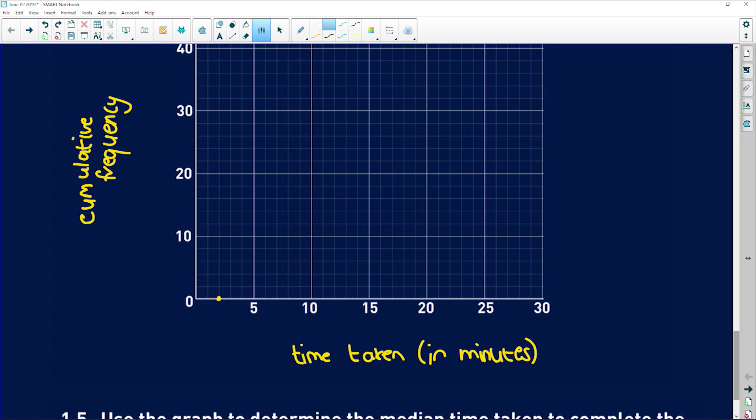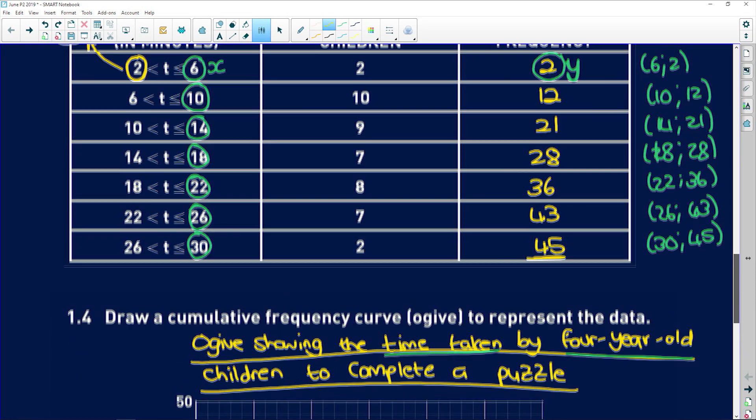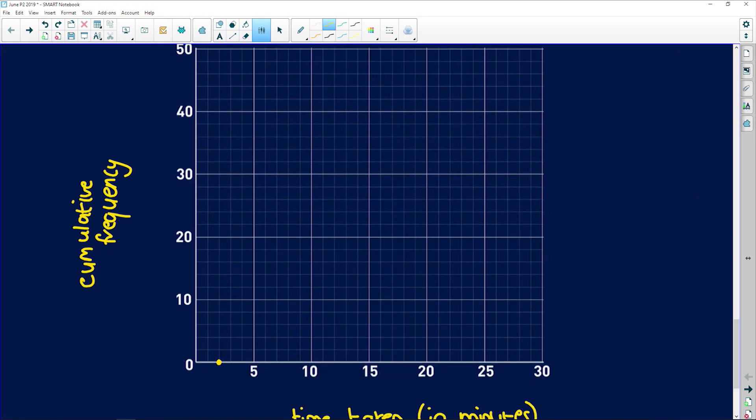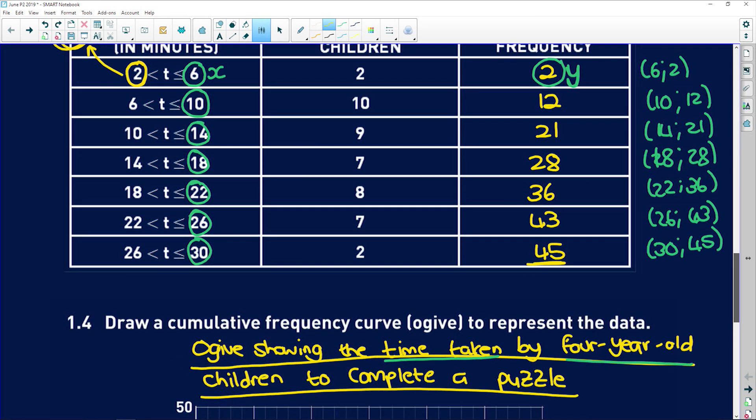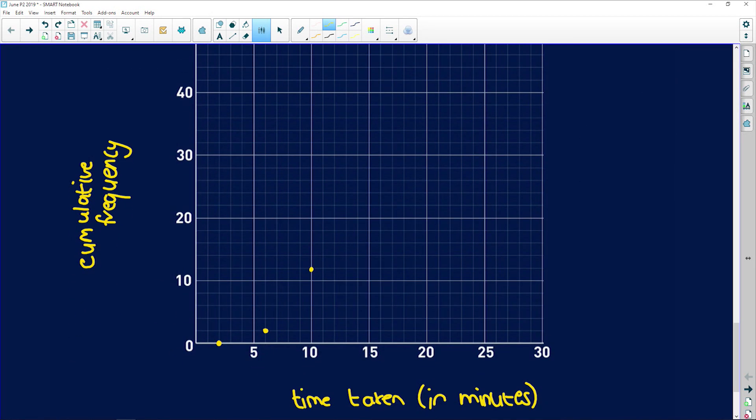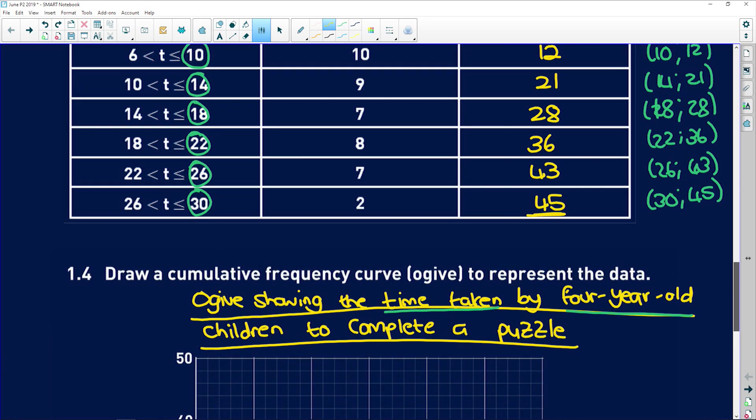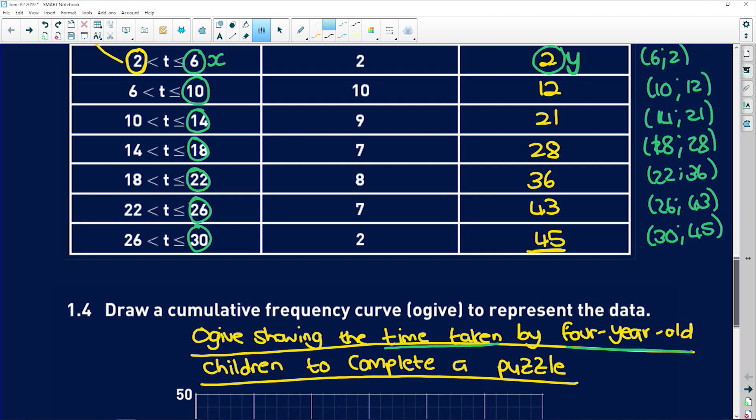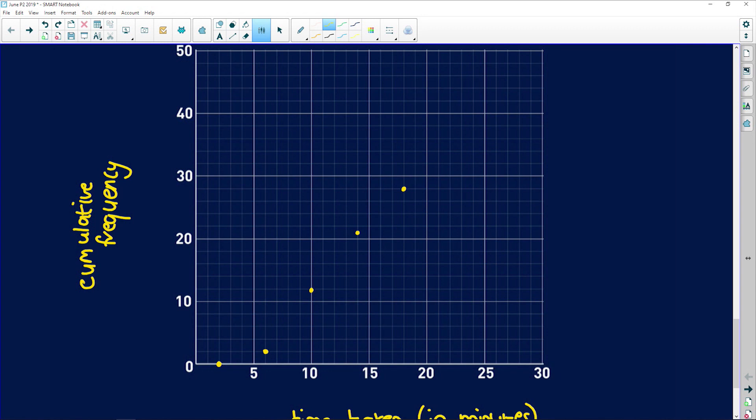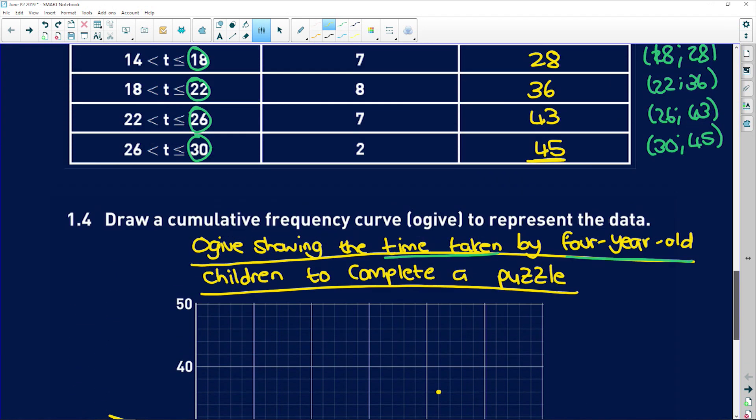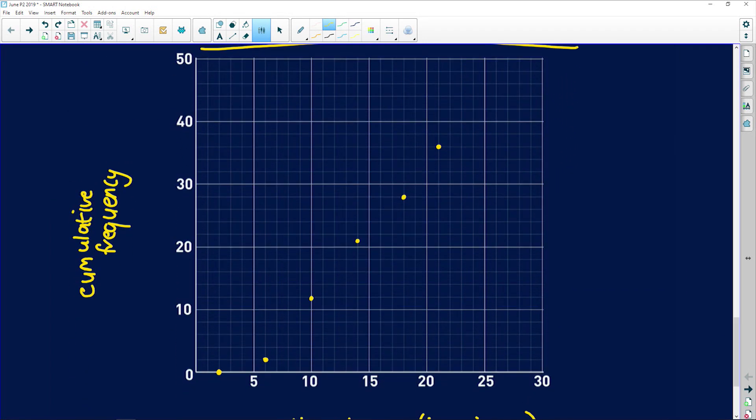So that would sit over there, and then we can start plotting our points. So we have 6 and 2 and 10 and 12, so 6 and 2 would be here. 10 and 12 would be there. Then we go 14 and 21 and 18 and 28. 14 and 21 and 18 and 28. They will give you the grid, so make sure that you understand the units that they've been using. 22 and 36.